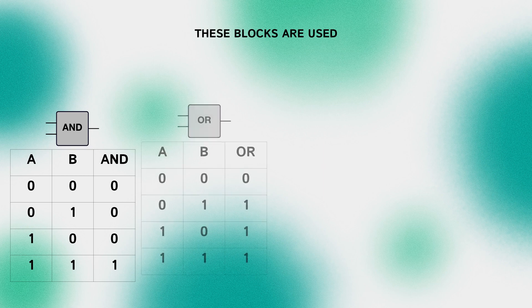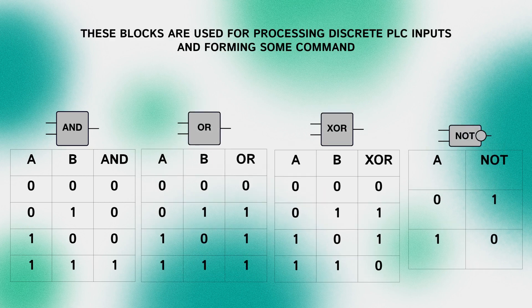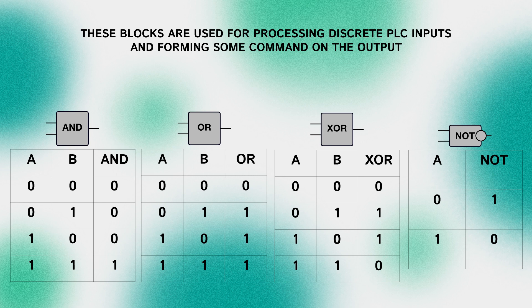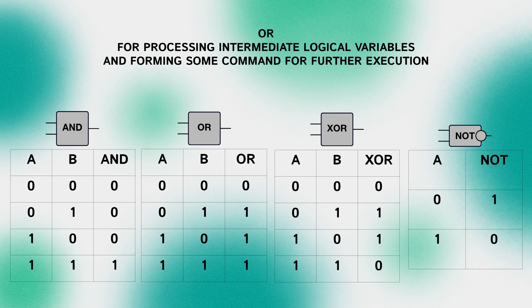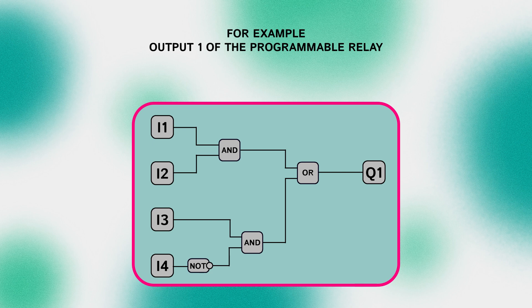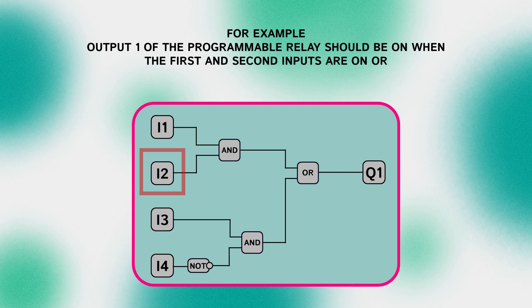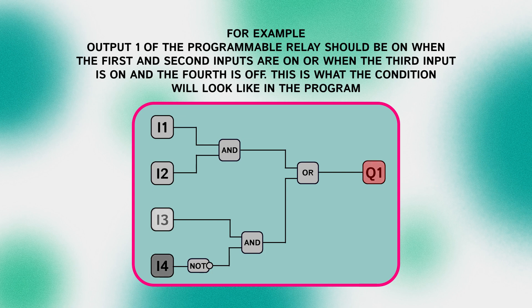These blocks are used for processing discrete PLC inputs and forming some command on the output, or for processing intermediate logical variables and forming some command for further execution. For example, output 1 of the programmable relay should be ON when the first and second inputs are ON, or when the third input is ON and the fourth is OFF. This is what the condition will look like in the program.